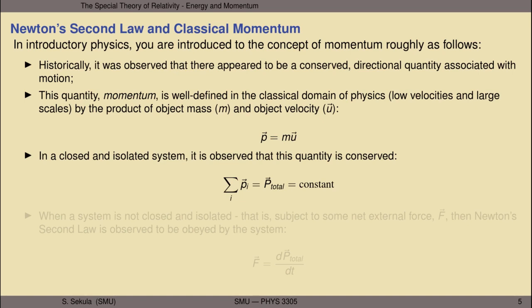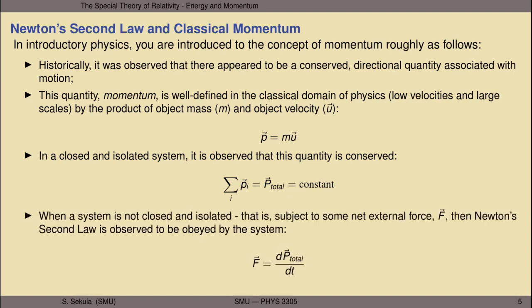In a closed and isolated system with objects i equals one to n, it is observed that momentum overall is conserved — the sum of all momenta of all objects remains constant no matter what happens inside that system. When a system is not closed and isolated — for instance, subject to some net external force f — then Newton's second law is obeyed: the net force acting on the system is given by dp/dt. So Newton's second law f = ma can be rewritten as f = dp/dt.